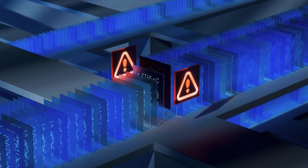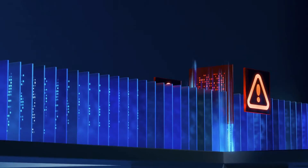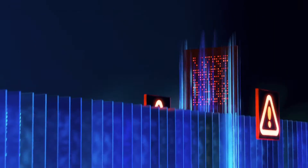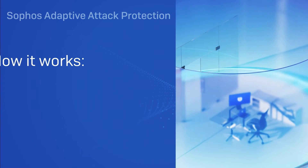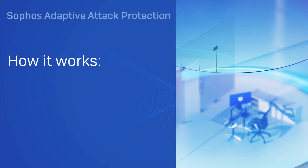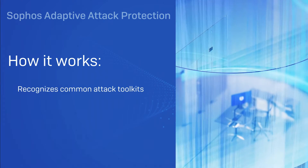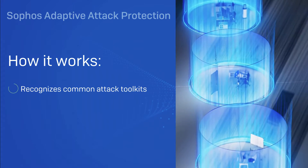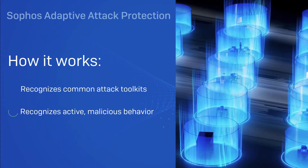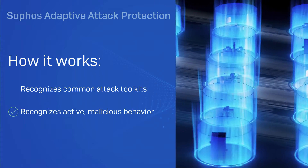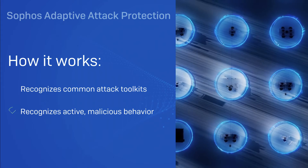This includes blocking actions that may not be inherently malicious in an everyday context but are dangerous in the context of an attack. AAP detects the presence of an active adversary in two main ways: through the use of common attack toolkits, and with combinations of active malicious behaviors that may be indicative of the early stages of an attack.